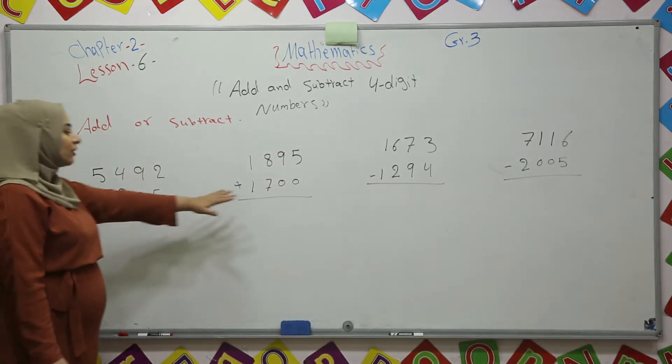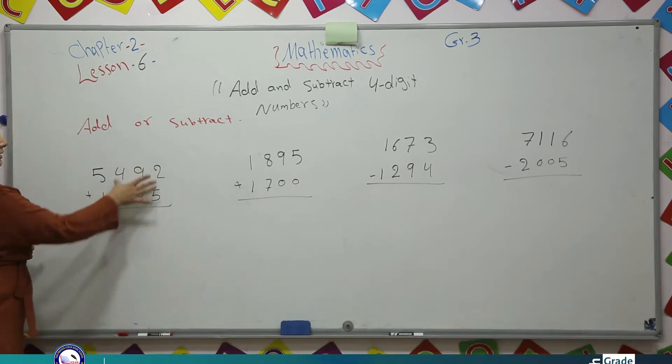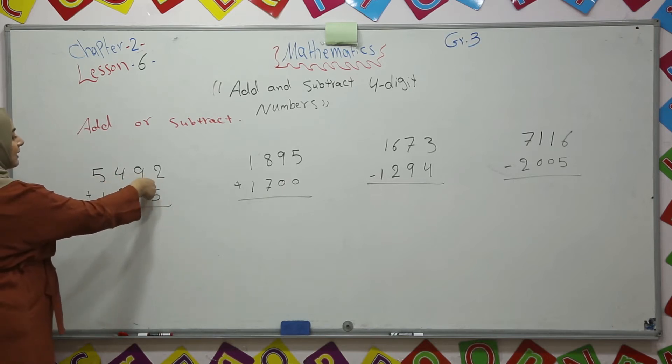Add or subtract, we have four examples. Look at our numbers. Both of them are four digit numbers. Ones, tens, hundreds, thousands.